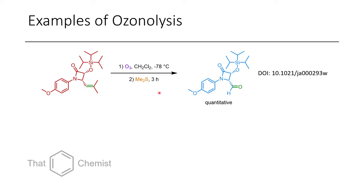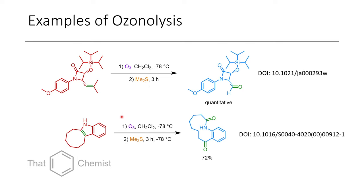Here are a couple examples of ozonolysis from the literature. In the first case, this trisubstituted alkene is converted to an aldehyde, as well as acetone — the other portion of the alkene would be converted to acetone — as they did a reductive workup with dimethyl sulfide. In the next case, you can see this interesting ring expansion reaction, where this cyclooctane-containing indole is cleaved to this ketoamide, which is an 11-membered ring. It's interesting to see that this electron-rich alkene very easily reacted with ozone, while the benzene ring was mostly untouched. It's fairly difficult to oxidize a benzene ring with most common reagents. One thing to highlight: if you have an electron-rich alkene, it will be more reactive towards ozone because ozone is fairly electrophilic, so it would react faster with an electron-rich alkene compared to something like a Michael acceptor such as an alpha-beta-unsaturated ketone.